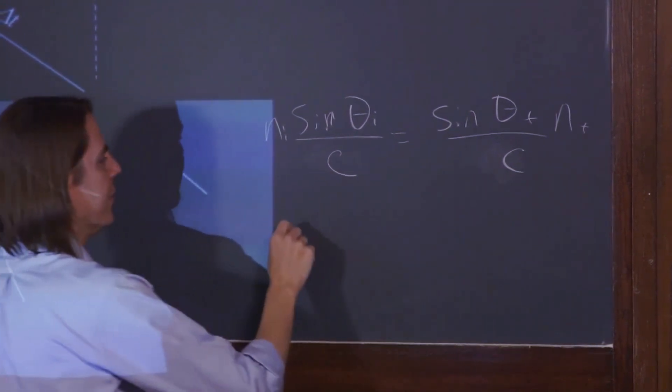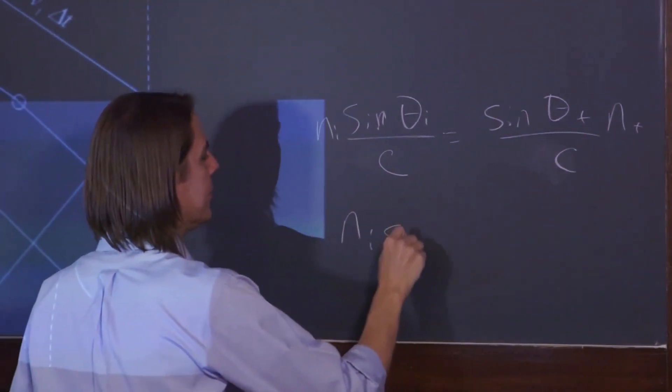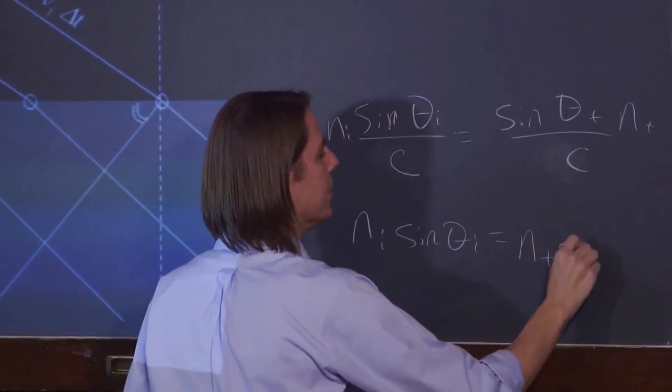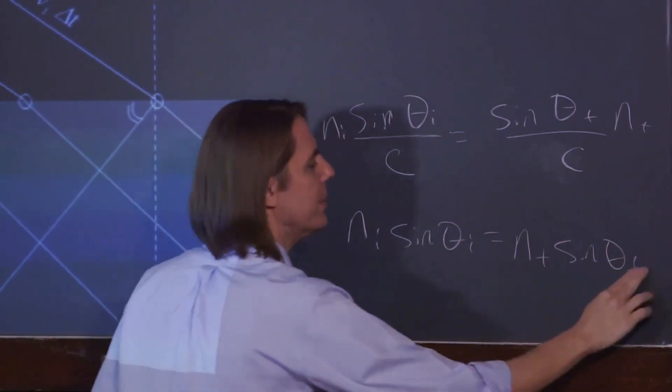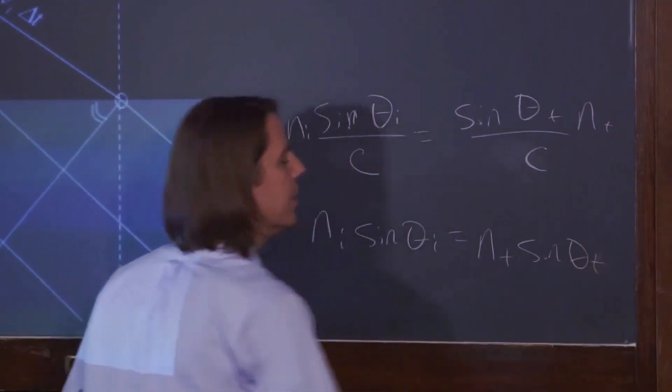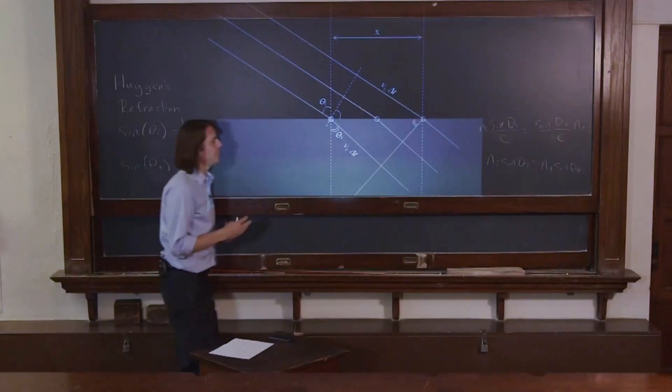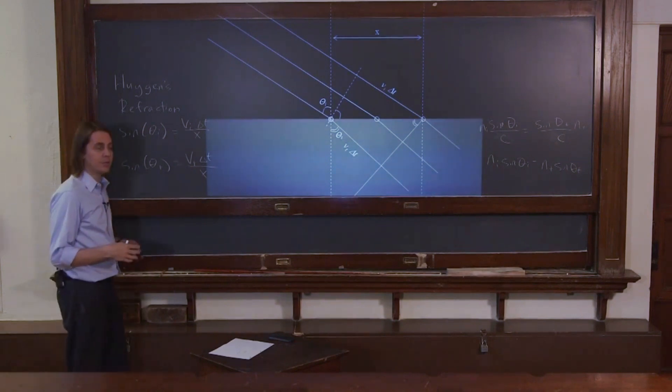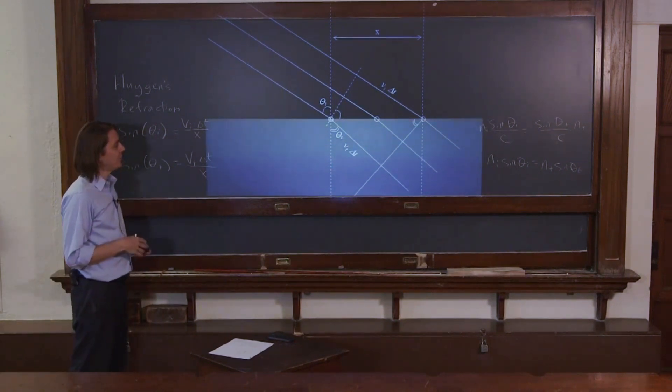And then you can see you get Snell's law. N incident sine theta incident equals N transmitted medium sine theta transmitted medium. So like I said, these principles, these simple geometric principles, can reproduce a lot of the important relationships about how light behaves on reflection and refraction.